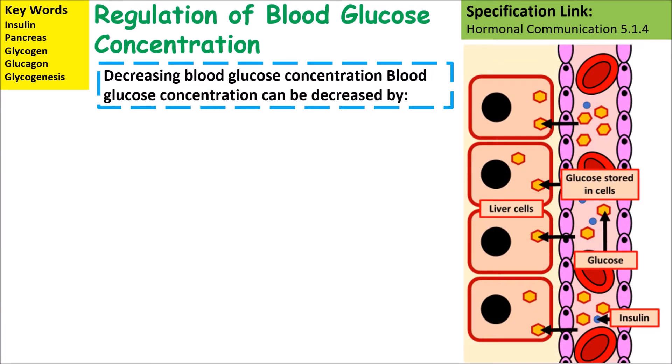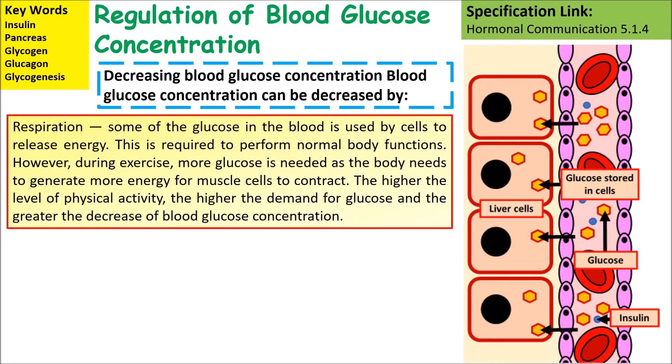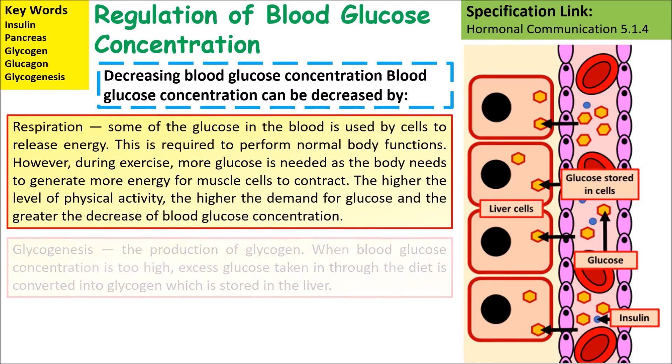A decrease in blood glucose concentration can be caused by respiration. Some of the glucose in the blood can be used by cells to release energy via respiration, and this particularly happens when you have lots of muscles contracting.